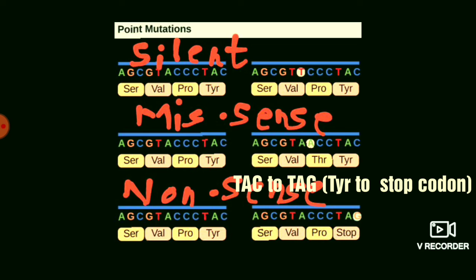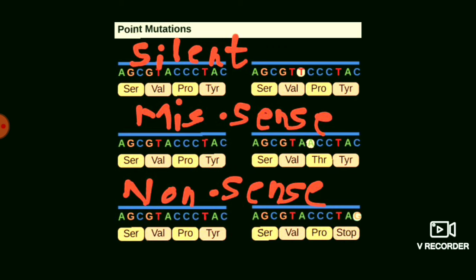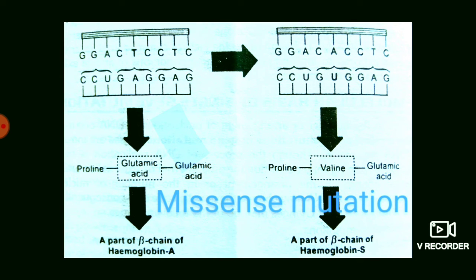To summarize the types of point mutations: First is the silent mutation — there is no change in the amino acid sequence, so the polypeptide chain remains the same. The only change is in a single nitrogen base. Next is the missense mutation, where there is a change in the amino acid, leading to a completely new polypeptide chain that may cause drastic or lethal phenotypic effects. The example is sickle cell anemia, where T is replaced by A, so glutamic acid is replaced by valine.